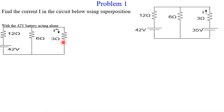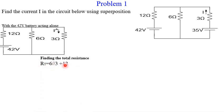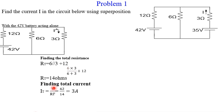When the 42-volt battery is acting alone, we draw the circuit and find the total resistance. We realize that the 6-ohm and 3-ohm resistors are in parallel, and after combining them they are in series with the 12-ohm resistor. So the total resistance is 14 ohms. Using Ohm's law, the total current is 42 divided by 14, giving us 3 amps flowing through the circuit. We are finding the current specifically through the 3-ohm resistor, which we name IA.